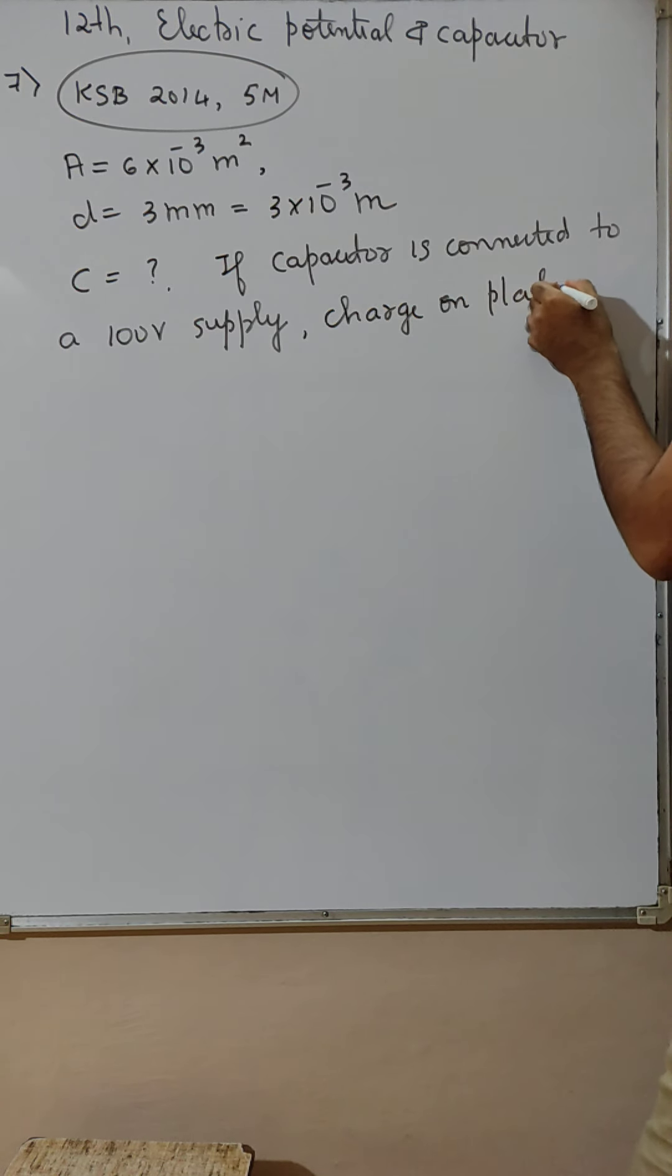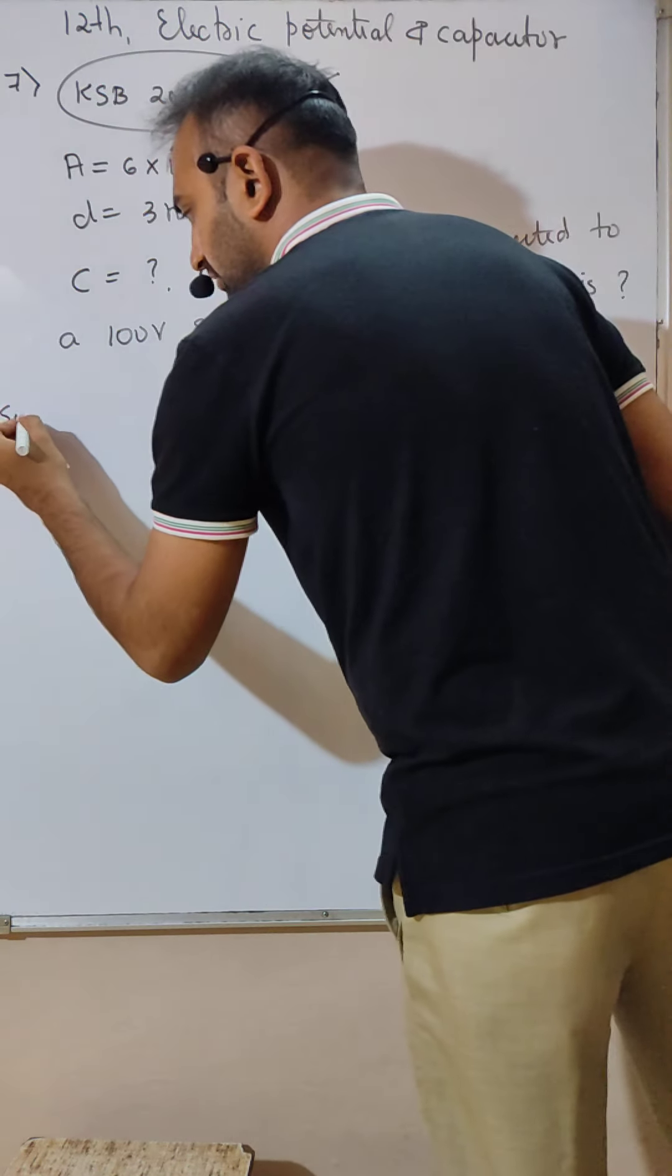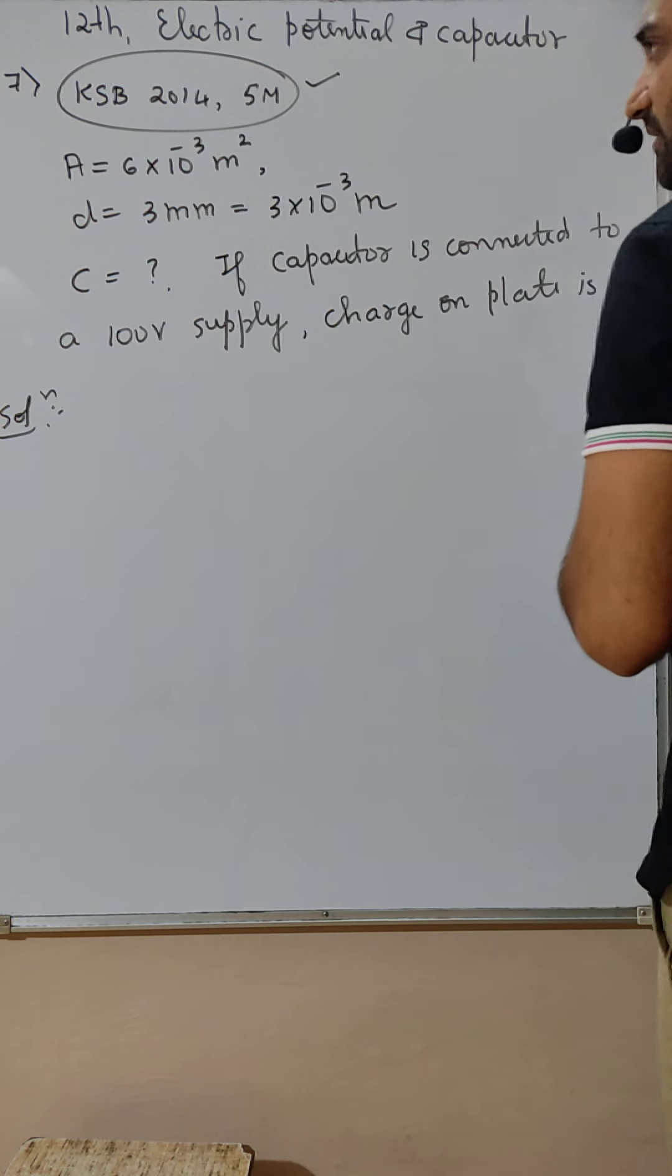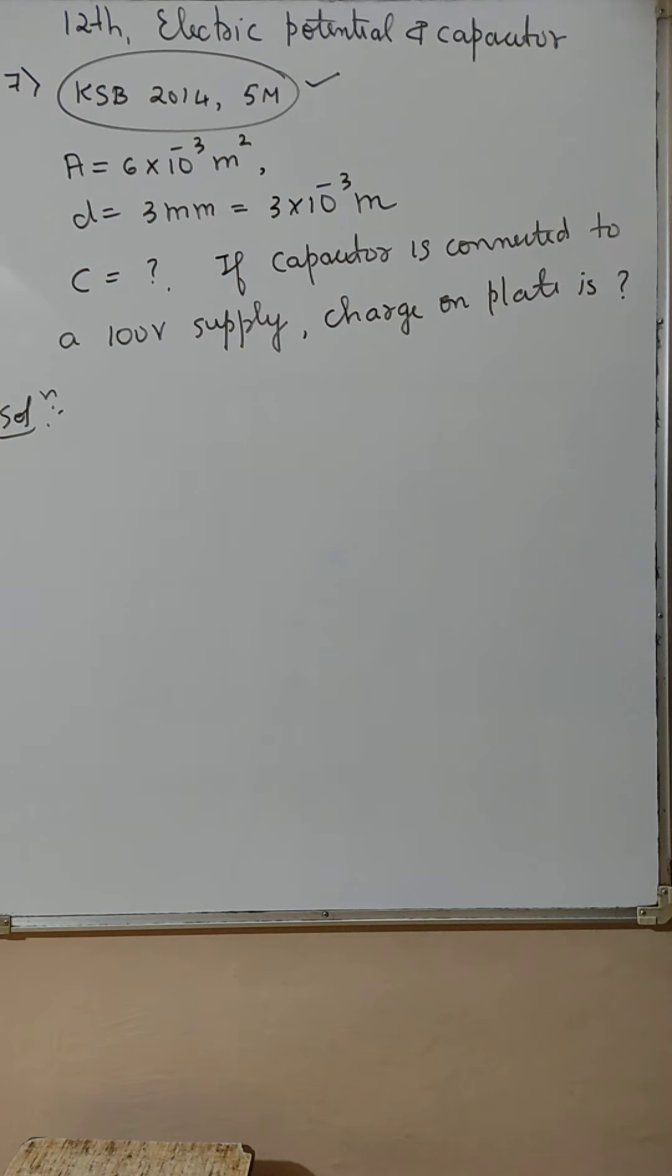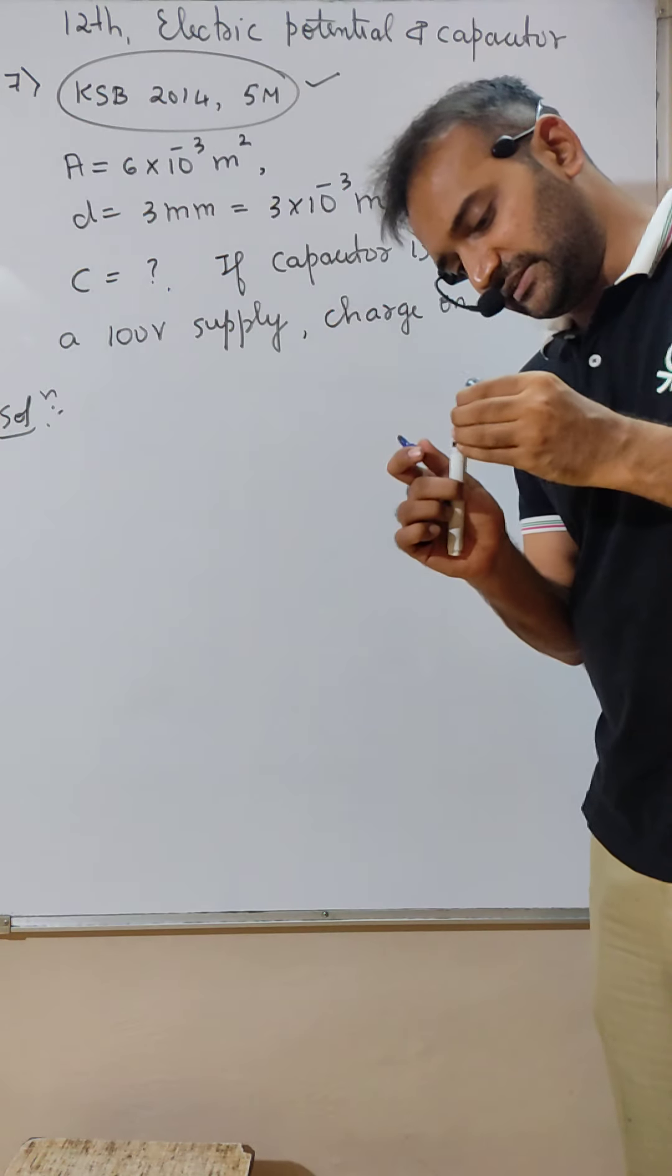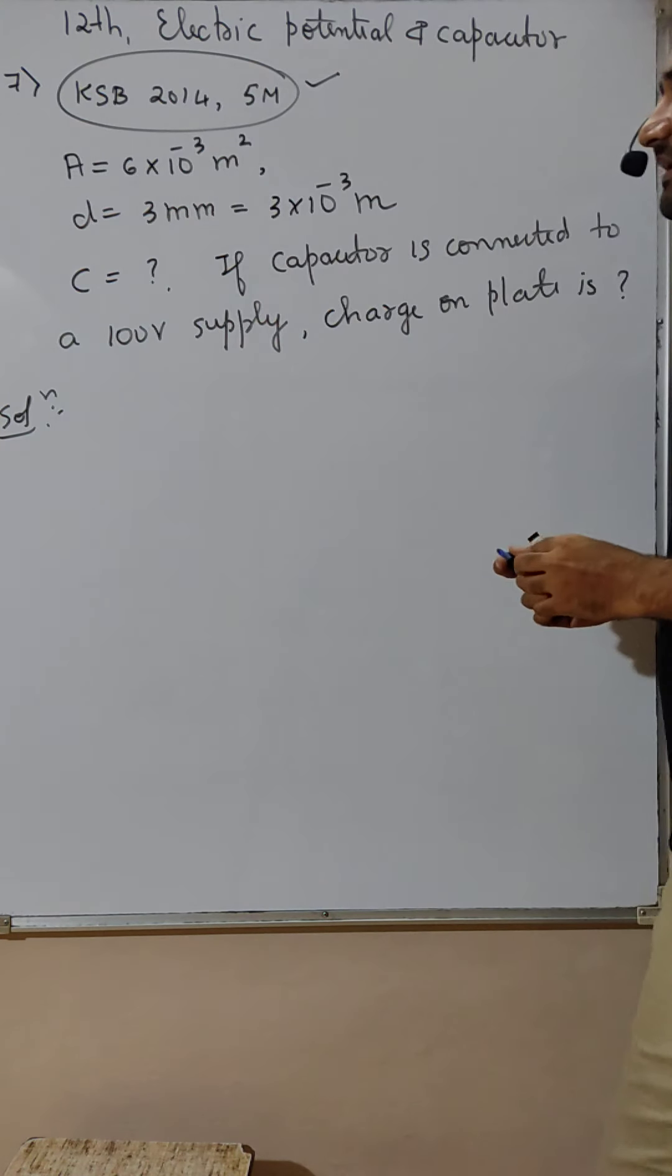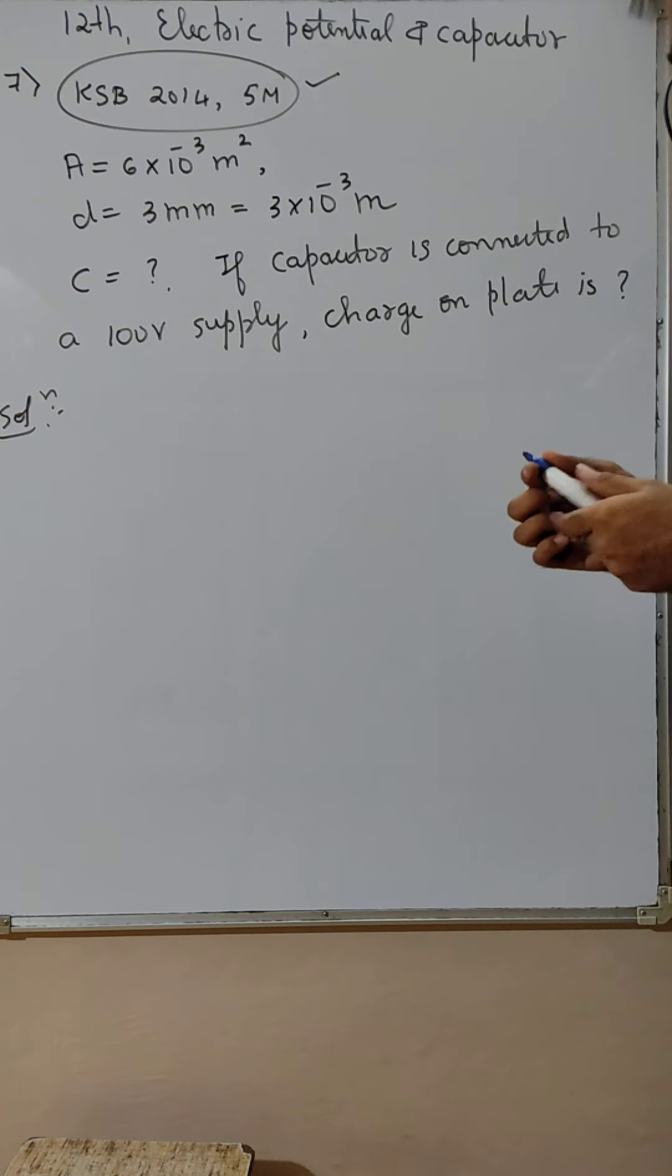Karnataka State Board exam 2014, 5 mark solution. Let us deal with this now. There is an area 6 into 10 raised to minus 3. They have given distance, they are asking us capacitance.